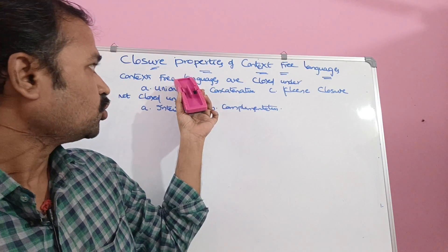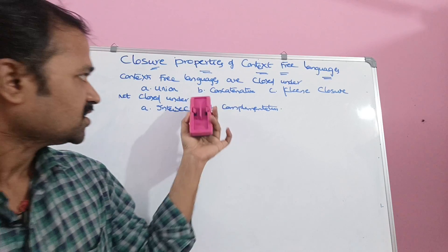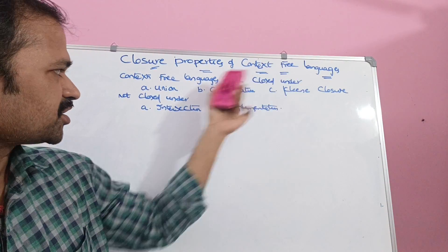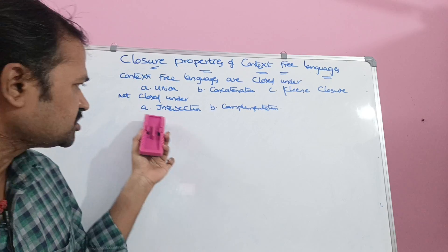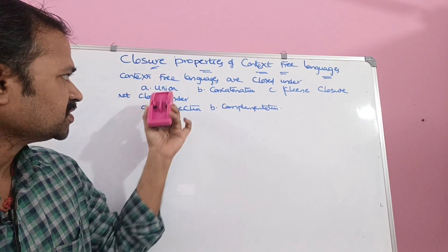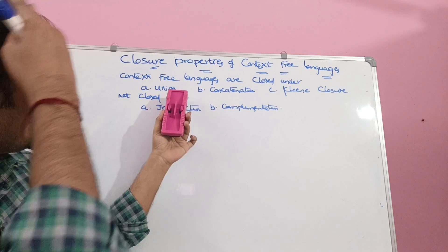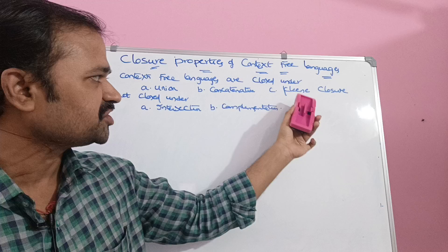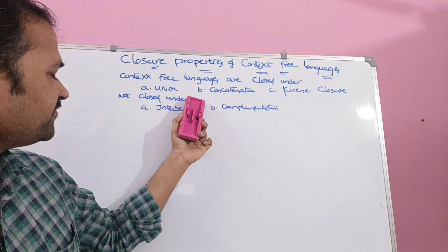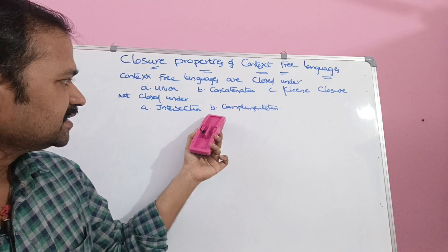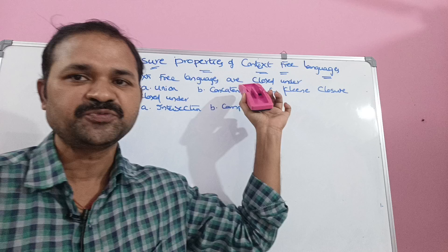Let us discuss the closure properties of context-free languages. Context-free languages are closed under three properties and not closed under two properties. Context-free languages are closed under union, concatenation, and Kleene closure. Context-free languages are not closed under intersection and complementation.